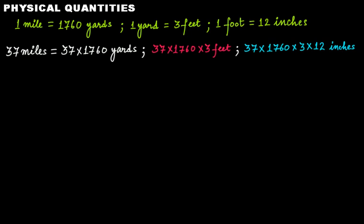Imagine we have 37 miles and need to convert it into inches. One mile equals 1760 yards, one yard equals 3 feet, and one foot equals 12 inches. So from miles to inches: 37 multiplied by 1760 gives yards, then multiplied by 3 gives feet, then multiplied by 12 gives inches. The units used here are miles, yards, feet, and inches.